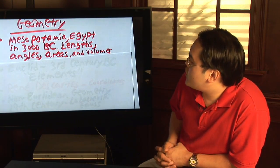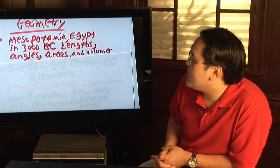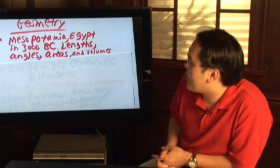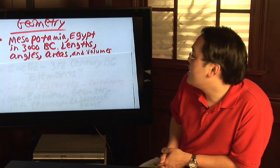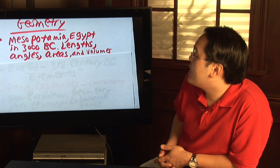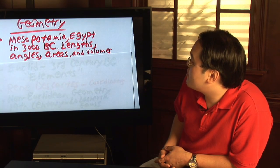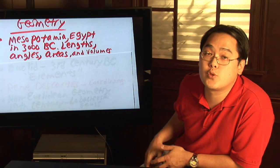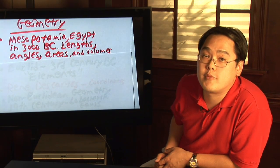In the Mesopotamia and Egyptian regions in 3000 BC, geometry got its earliest recorded start. Geometry in Latin means earth measure, and there was a lot of measurement going on. Those civilizations measured lengths, angles, areas, as well as volumes. Those were the first earliest recorded geometric measurements.